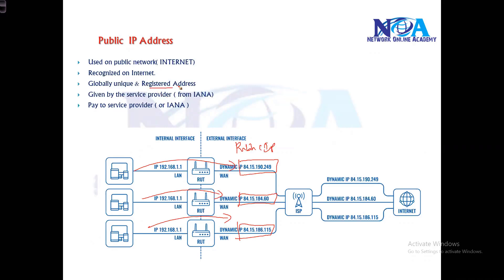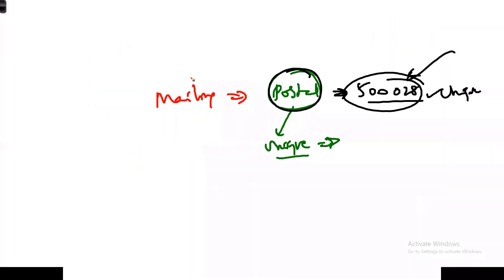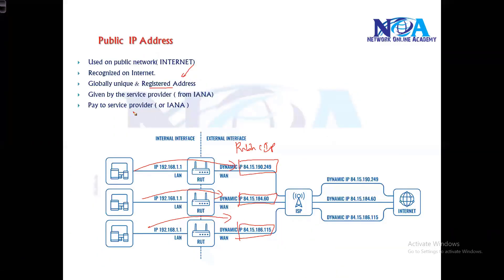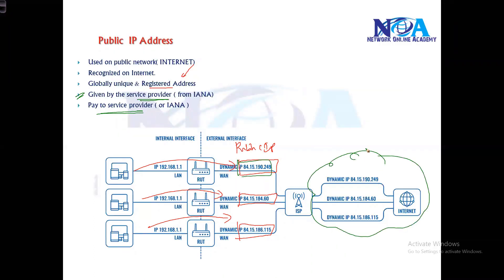These IPs are registered - registered means unique, just like your postal codes or your vehicle registration numbers, they are unique. Similarly, registered IP addresses. To get this address we need to get it from the service provider, and of course the service provider gets it from IANA - I'll talk about that hierarchy later. So you need to pay the service provider to get that IP so that you can get that registered address. So typically if you want to route the packets over the internet, you must be sending a packet based on some unique address, and we call that unique address a public IP address.